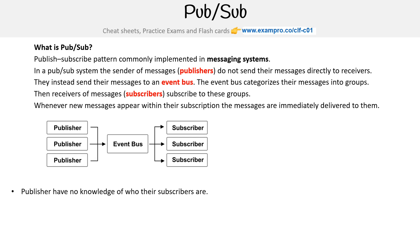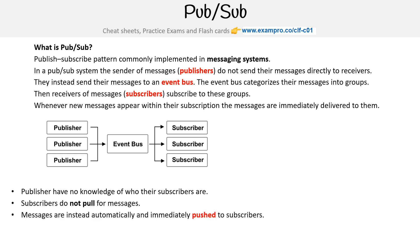The publisher has no knowledge of who the subscribers are. The subscribers do not pull for messages — messages are automatically and immediately pushed to the subscribers. Messages and events are interchangeable terms in pub/sub.